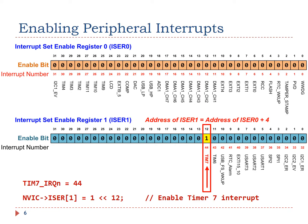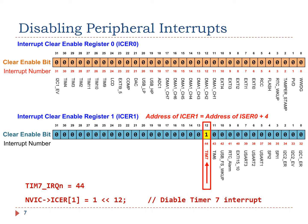Note that writing 0 to a bit in an ISER register does not disable the corresponding interrupt. Similarly, we can disable a peripheral interrupt by writing 1 to the corresponding bit of the ICER register. ICER stands for Interrupt Clear Enable Register. The interrupt number of timer 7 is 44, so to disable it, we set bit 12 of ICER1 to 1. Note that writing 0 to ICER has no effect.